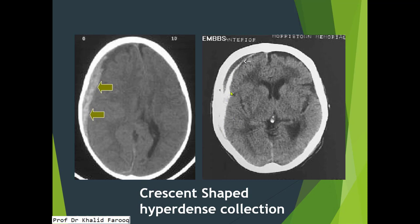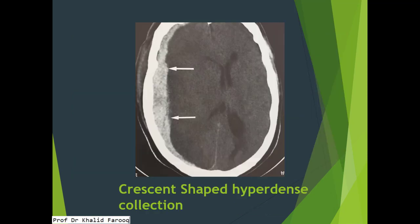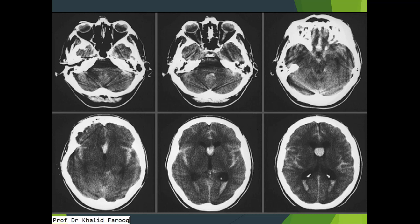Such hematomas are usually because of tear or injuries of the meningeal veins. Here we can see that due to mild trauma, there is scalp edema and a subdural hematoma appreciated over the right cerebral hemisphere. Mild mass effect is appreciated on the right lateral ventricle with subtle contralateral midline shift.